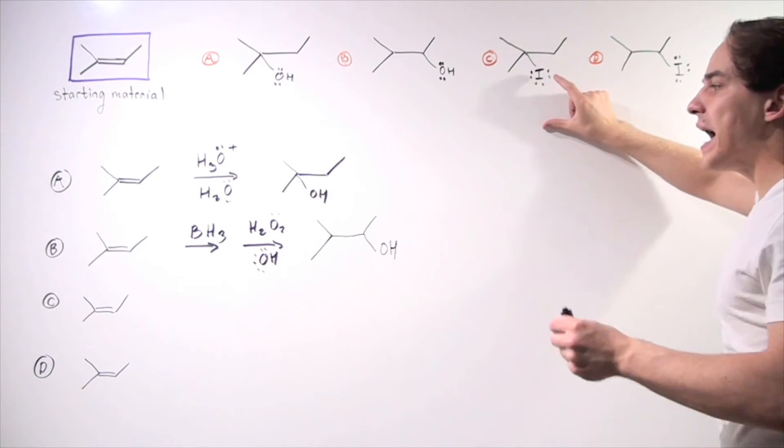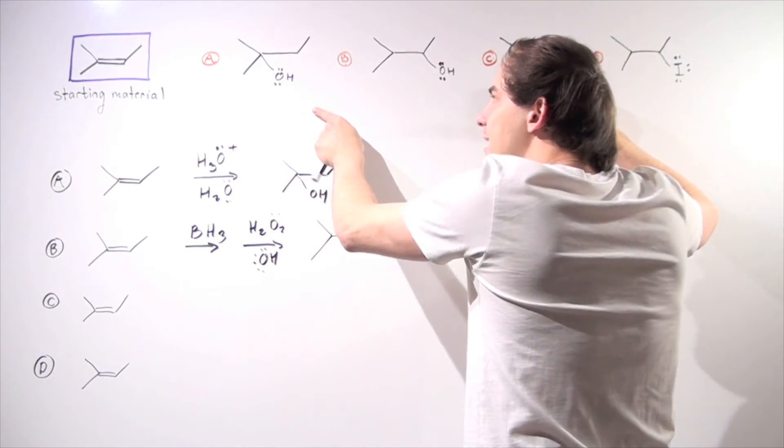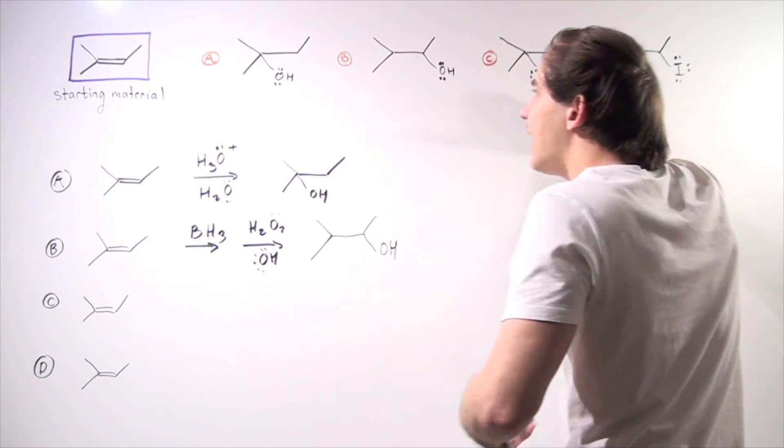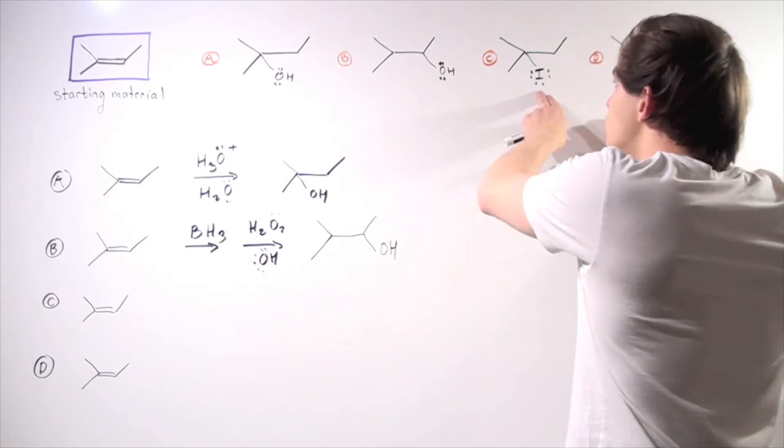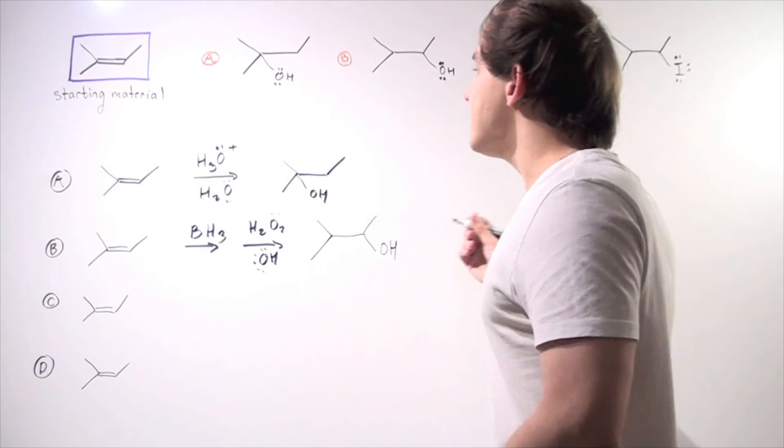So how about we first form our product A, and then we add an HI molecule that will hopefully produce this molecule. Will that work? Well, let's see.